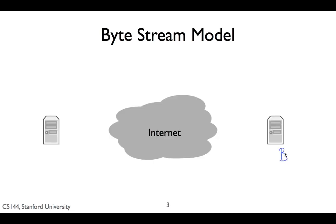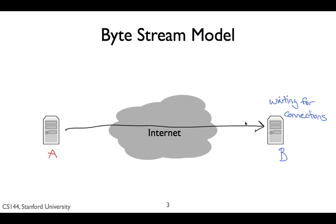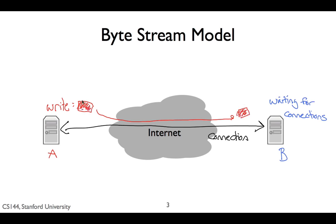Let's walk through what this looks like. Computer B, on the right, is waiting for other computers to connect to it. Computer A, on the left, wants to communicate with B. For example, although it's drawn here as a server, it could be a mobile phone running a web browser. A and B set up a connection. When A writes data to the connection, this data travels over the network and B can read it. Similarly, if B writes data to the connection, that data travels over the network and A can read it. Either side can close the connection.